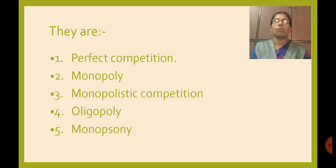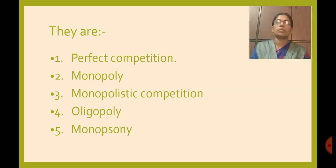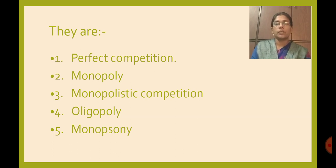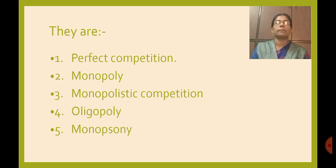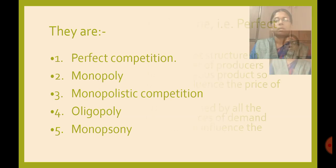Today we are going to understand different forms of market structure and their classification, which is divided on the basis of buyers competition and sellers competition. Sellers competition refers to how producers and firms which produce a particular commodity can influence the market price. Buyers competition refers to how buyers — whether large, few, or single in number — are able to influence the price. On this basis, we classify market forms into five types: perfect competition, monopoly, monopolistic competition, oligopoly — all four being sellers competition — and monopsony, which is a buyers competition.